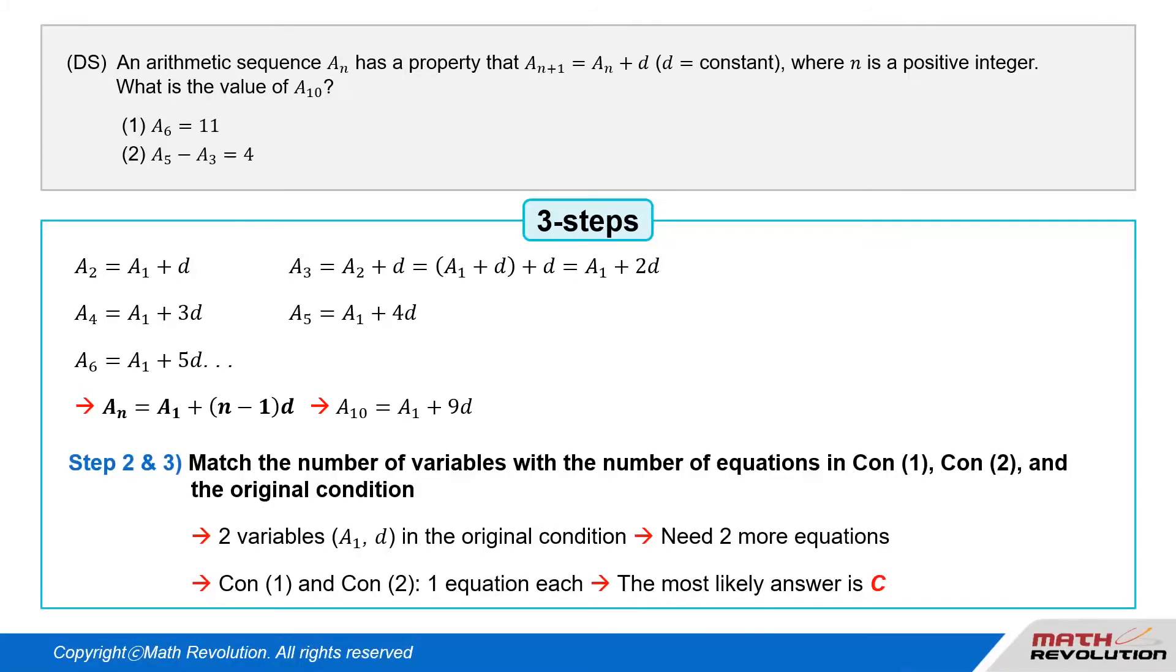Follow the second and third steps. From the original condition, we have two variables: a_1 and d. To match the number of variables with the number of equations, we need two more equations. Since conditions 1 and 2 will provide one equation each, it's about 70% likely that C would be the answer.